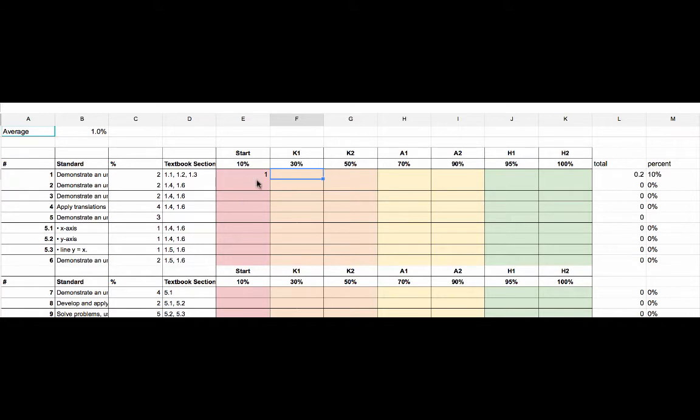As a student starts to acquire knowledge, you can see here they have 10% of the knowledge of standard 1. Now that contributes a certain amount to their overall mark. As the year goes by and they show me more knowledge, then their mark for certain areas goes up and their overall average goes up.